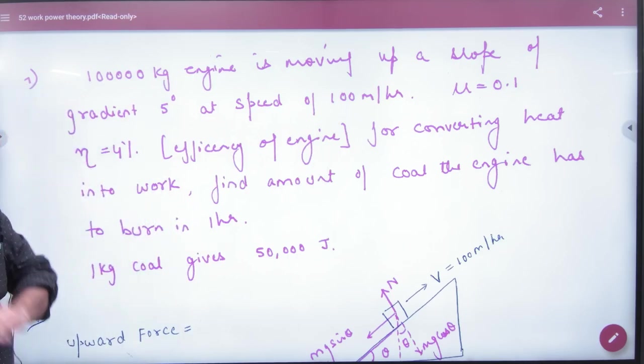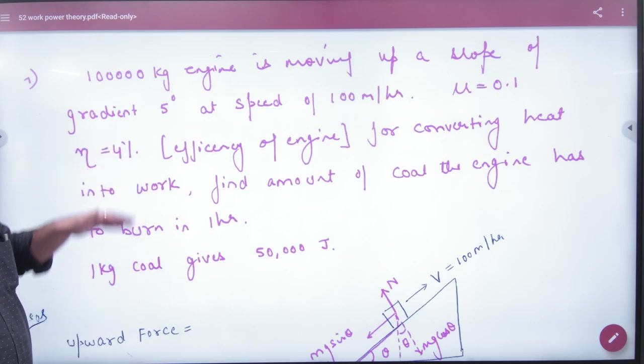The friction coefficient μ is given as 0.1, and the engine efficiency is 4%. Let's understand what efficiency means for this engine.